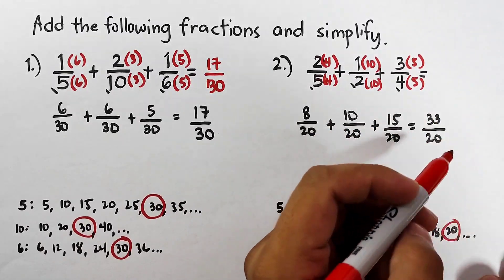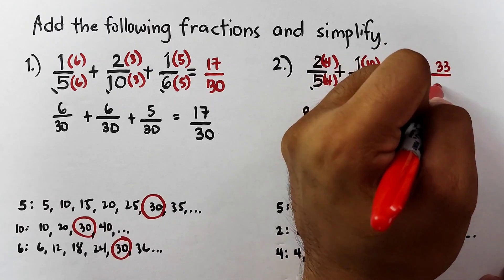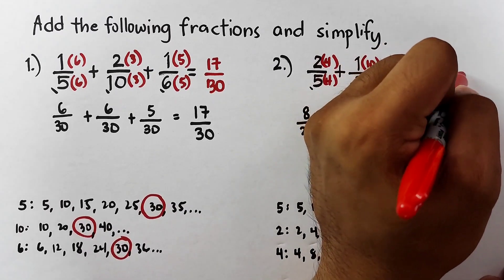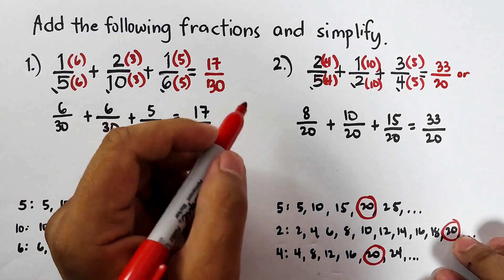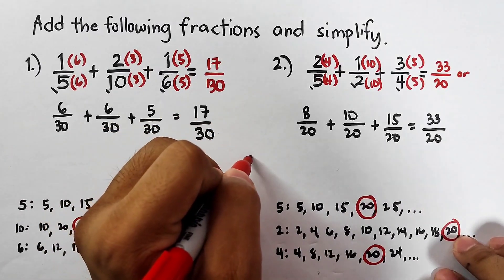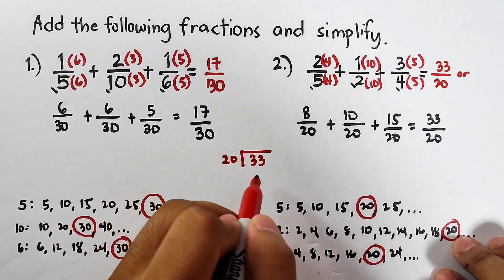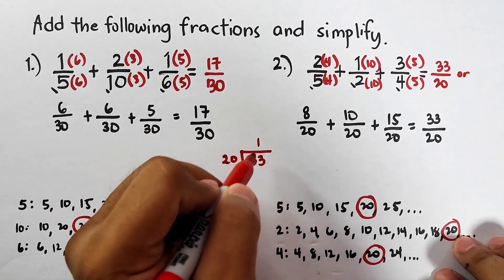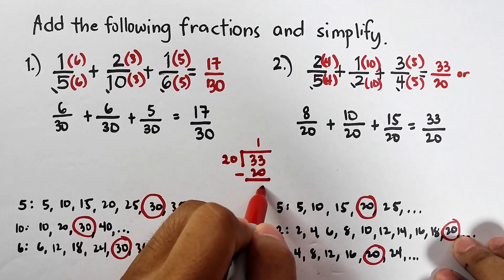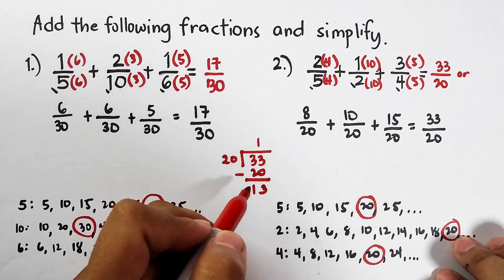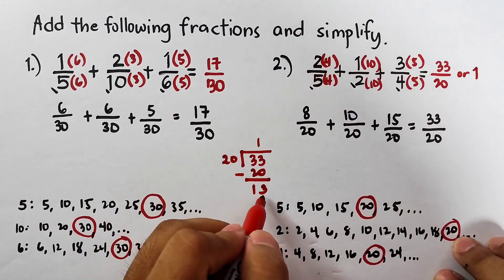This is 33 over 20. To express this into a mixed number, we will divide 33 by 20. 33 divided by 20 is 1. 1 times 20 is 20, and this is 13. So this is your whole number, your numerator is 13,